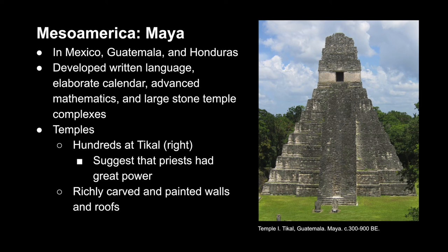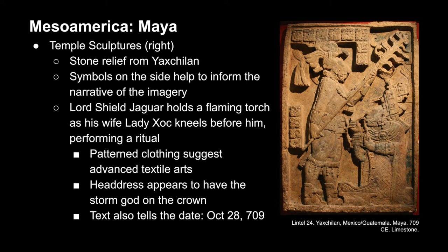Moving on to the Mayans, who were located in present-day Mexico, Guatemala, and Honduras. They were known for their development of written language, elaborate calendar, advanced mathematics, and large stone temple complexes. In Tikal, there were hundreds of temples that suggested that priests had great power. The one we see in this example was created during the classical Maya period from 300–900 CE. This structure is a pyramid topped by a temple and stands at 200 feet high. Priests used it for ceremonies, during which they emerged onto this high platform to perform dances as worshippers watched below.